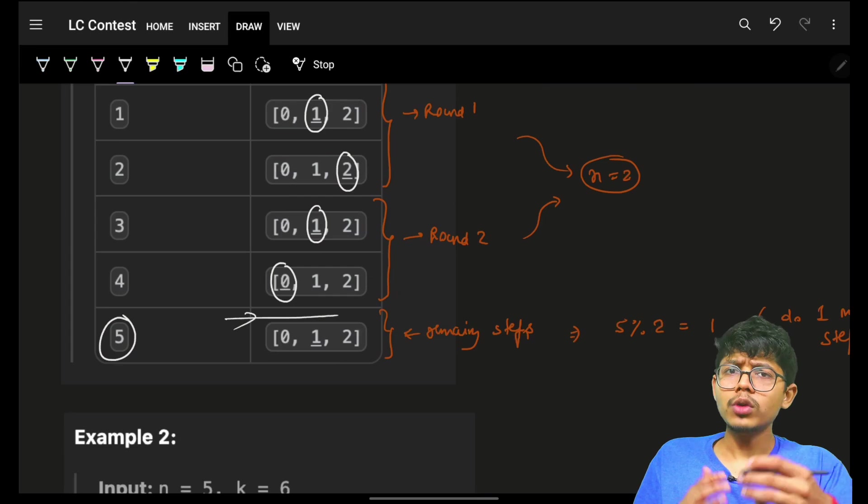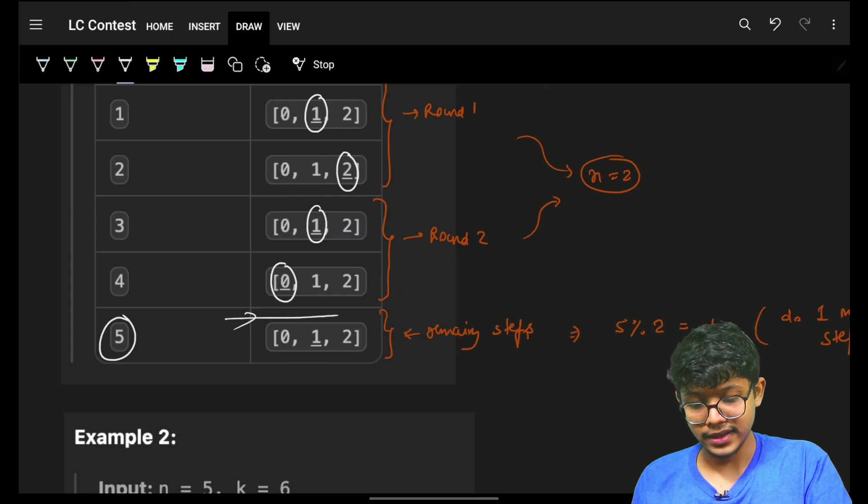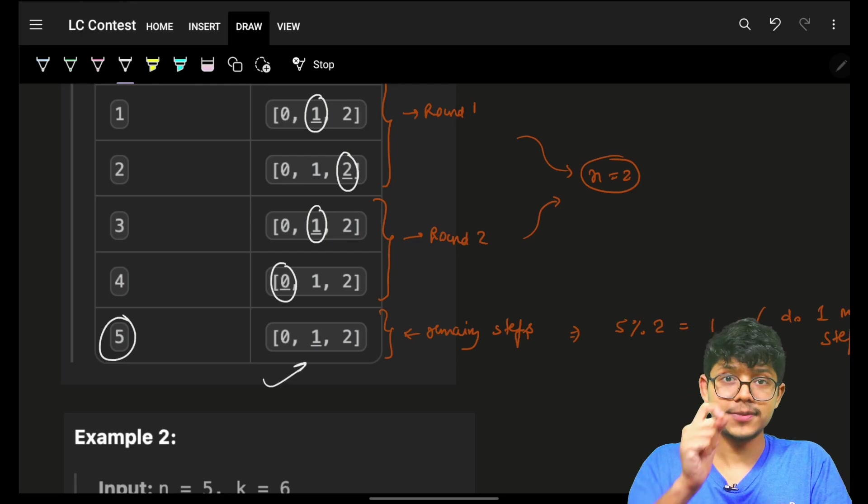So, you have to just figure out which round it is, and how many steps are remaining for the last round. And thus, you will be able to simply reach that specific index.